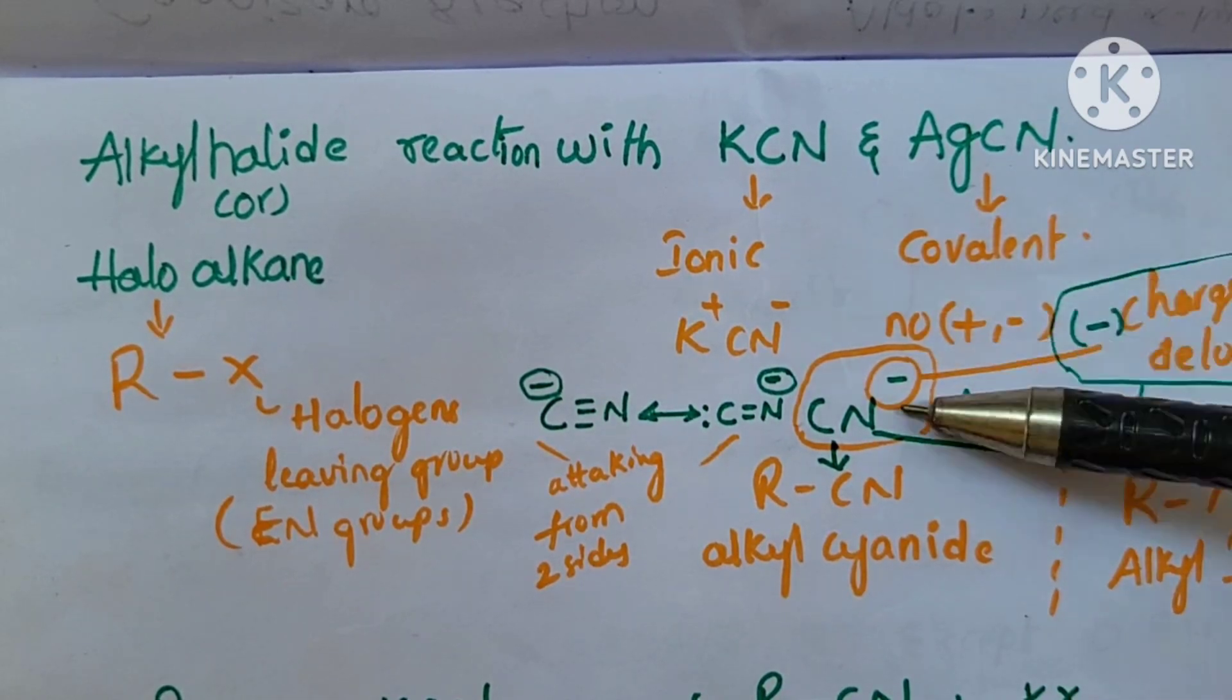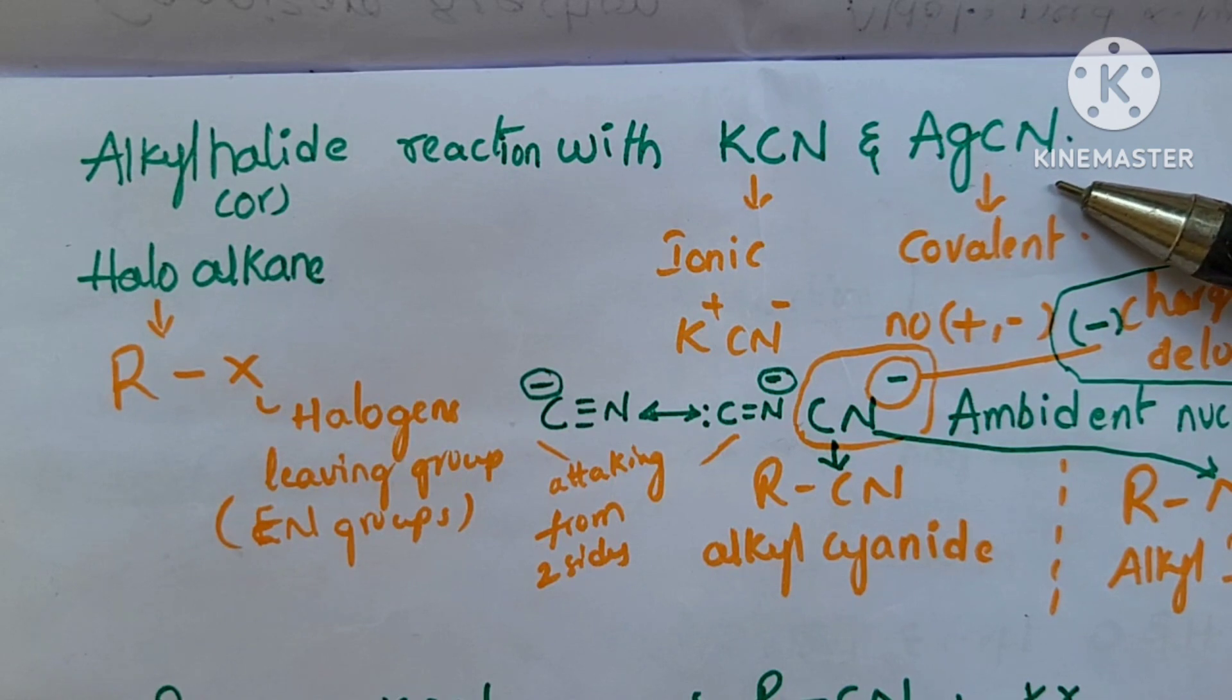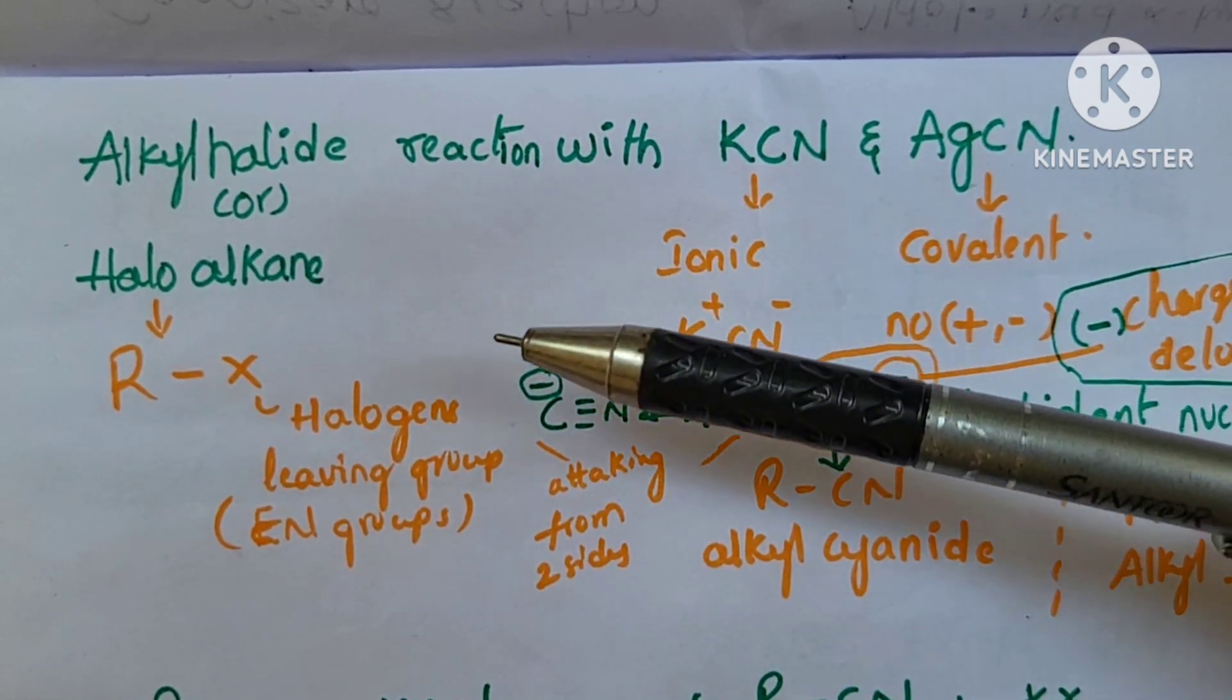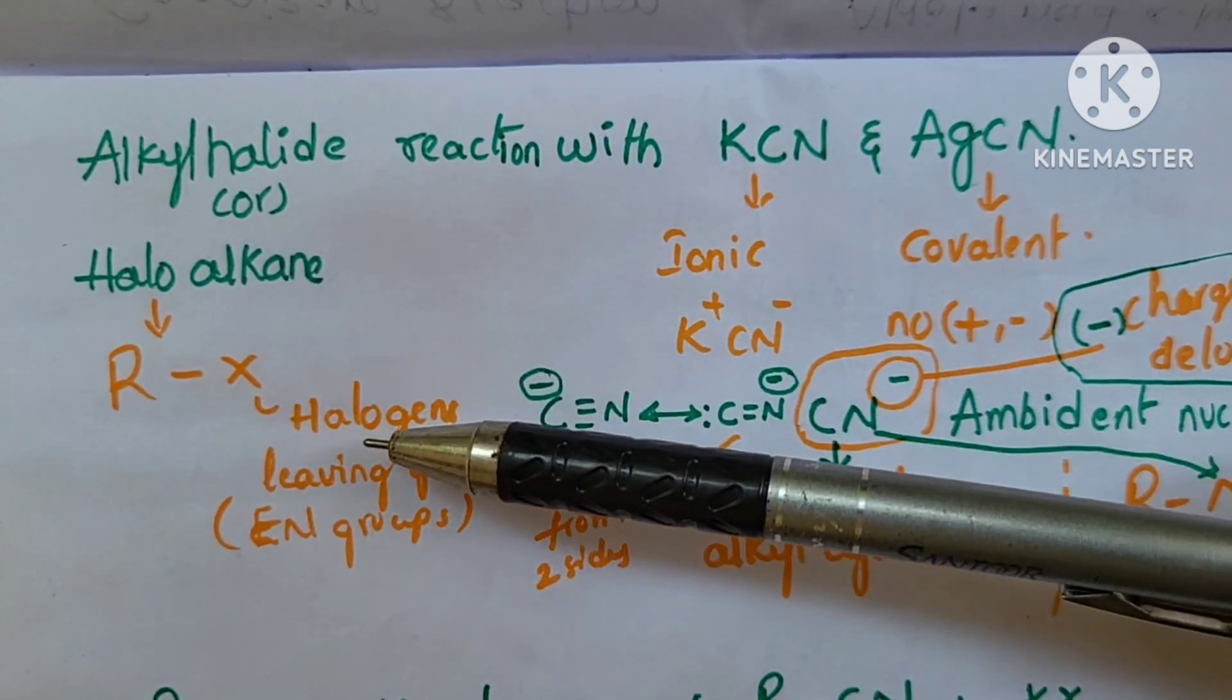Hi students, the question is about alkyl halide reactions with KCN and AgCN, when the products are different. Alkyl halide is halo-alkanes. So now we will denote it as R-X.